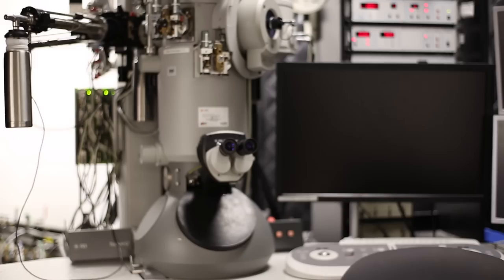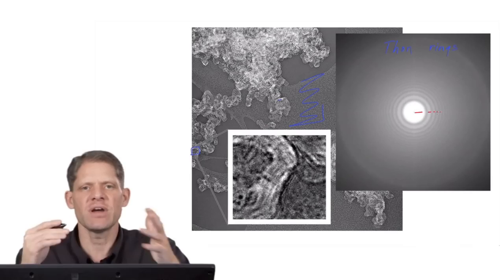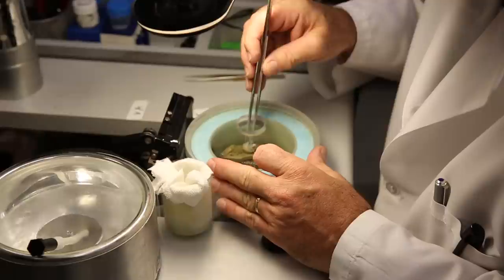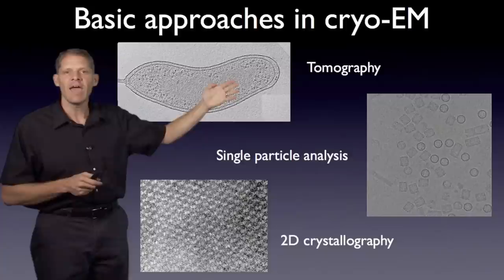The goal is that by the end of the course, you will have learned the basic anatomy of electron microscopes, the basic concepts underlying image formation, the kinds of sample preparation methods that have been developed so far, and the foundational concepts and workflows involved in electron tomography, single particle analysis, and electron crystallography.